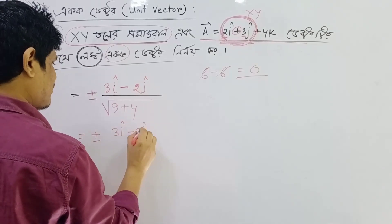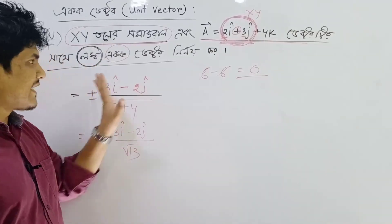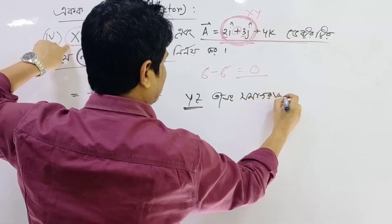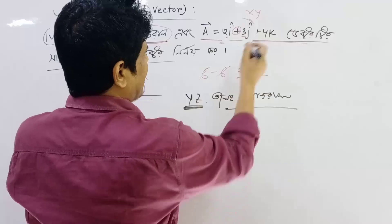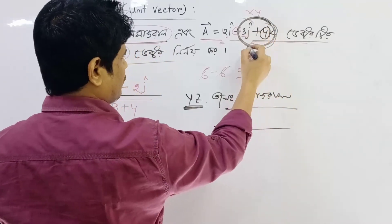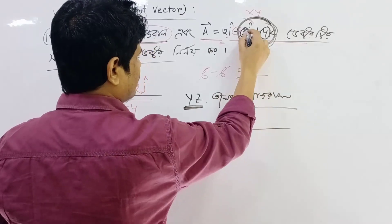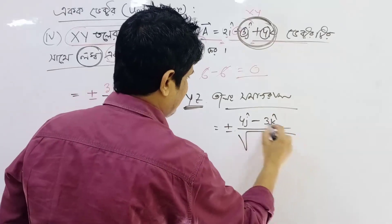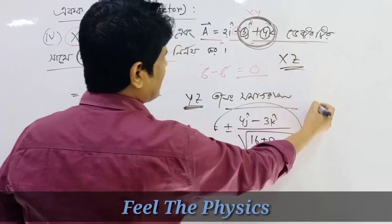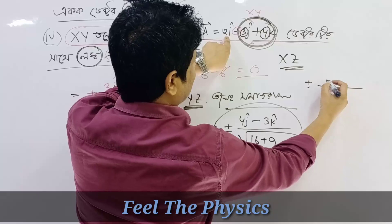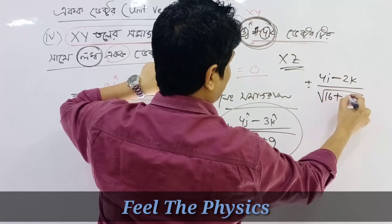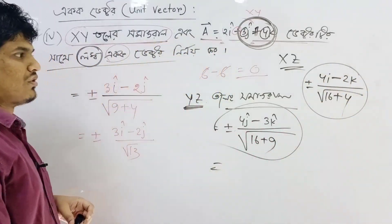Plus minus 3i minus 2j by root of 13 — this is the shortcut. When talking about yz and 0, that gives minus 6i minus 4i minus 5i minus 3i minus 4. Every object is a factor of 14, so we get 4I and 2K. Let's now practice the next problem. Thank you.